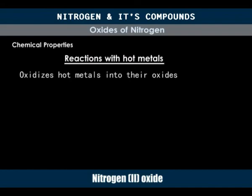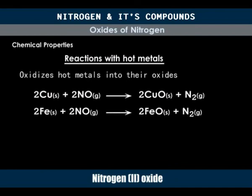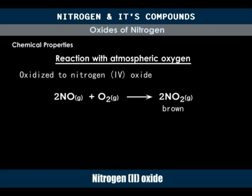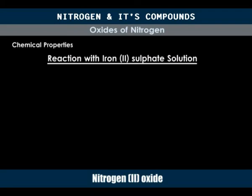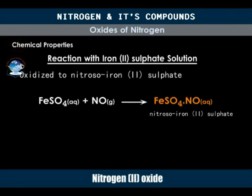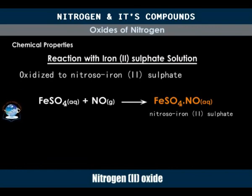Also, nitrogen-2 oxide oxidizes hot metals, for example copper and iron, to their oxides and is itself reduced to nitrogen. Nitrogen-2 oxide is instantly oxidized by atmospheric oxygen to nitrogen-4 oxide. An interesting reaction occurs between nitrogen-2 oxide and iron-2 sulfate solution. Nitrogen-2 oxide dissolves in cold iron-2 sulfate solution to give a dark brown solution of nitroso-iron-2 sulfate. This reaction is used for detecting nitrogen-2 oxide and is also the basis of the brown ring test for nitrates. If the nitroso-iron-2 sulfate is heated, nitrogen-2 oxide is released.